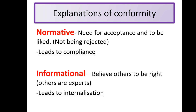Looking at explanations of conformity — just learn these two explanations. Some older textbooks will give you three, however for the AQA specification you only need to know these two. The first one, normative social influence, leads to compliance because we as human beings have a basic need to want to feel accepted and liked. So when we come across a new environment and we don't know anybody, we don't want to be rejected, so we tend to change our behaviour to be accepted by the group. That's why it leads to compliance — even though we may not genuinely believe in what they're doing, we change our behaviour publicly, but privately we don't believe it.